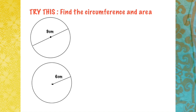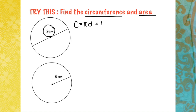Now it's your turn. Let's try the first example. You are asked to find the circumference and area. You are given the diameter of 9 cm. To find the circumference, using C = πd, we substitute π times 9, giving us an exact value of 9π cm, or the estimated value of approximately 28.27 cm.